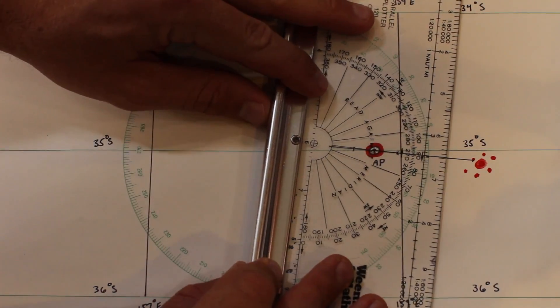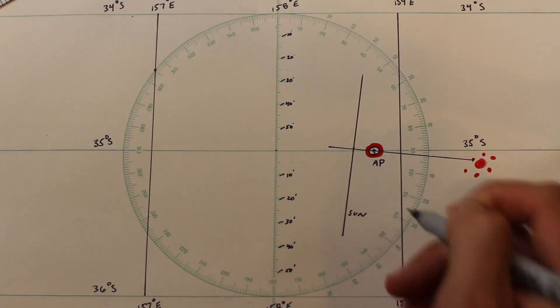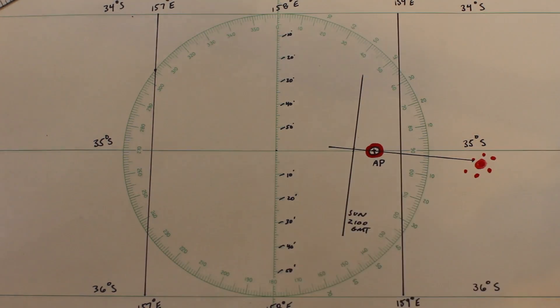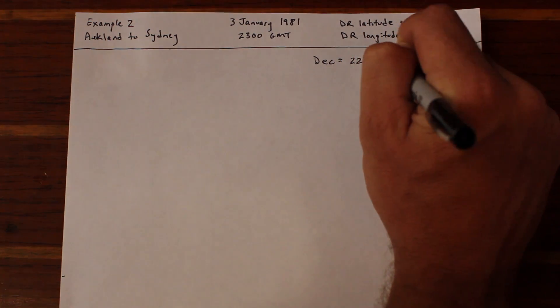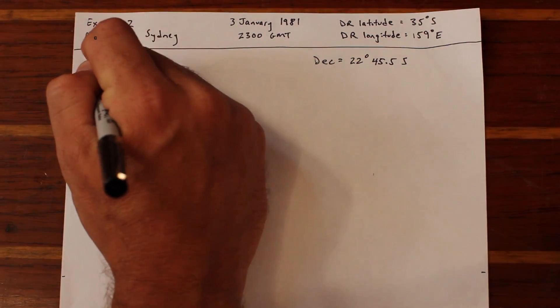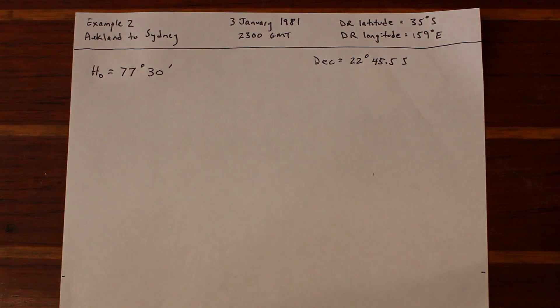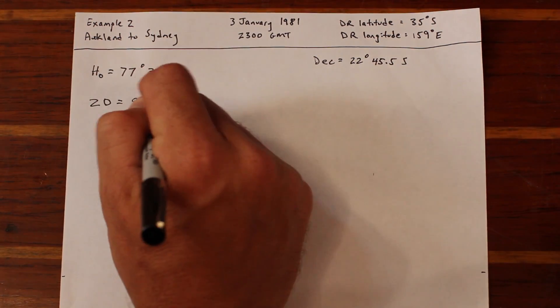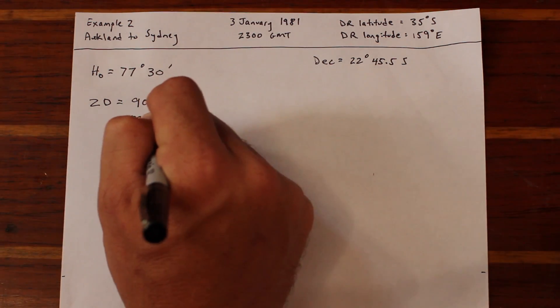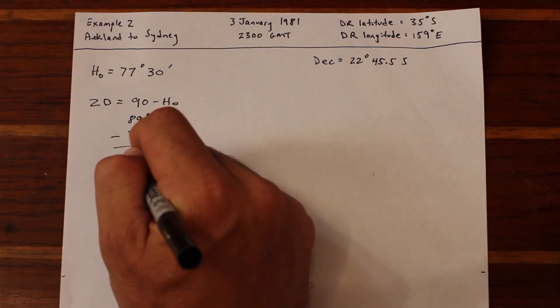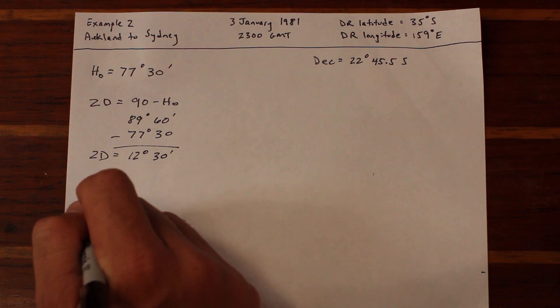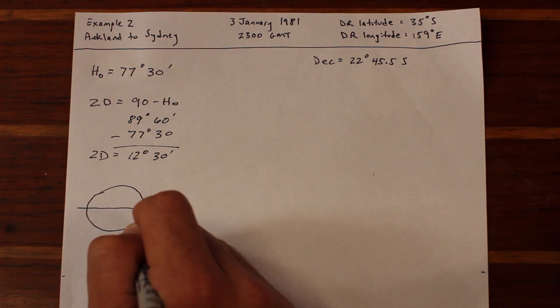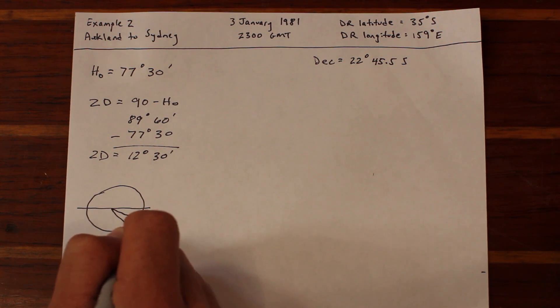So we've gotten pretty good at getting an LOP from the sun at any time of day. Let's let a couple of hours go by while we steer course 270 degrees true at a speed of 10 knots, and the sun gets higher in the sky. Eventually, we'll notice it's directly to our north, or on our meridian. We know that we can determine our latitude at local noon, so we shoot the sun, and after correcting the sextant, we get an observed height of 77 degrees in 30 minutes. We quickly determine our zenith distance, which is 90 degrees minus the sextant height, to be 12 degrees 30 minutes. And we look up the declination of the sun in the nautical almanac, and that turns out to be 22 degrees 45.5 minutes south.